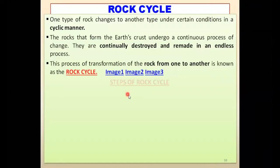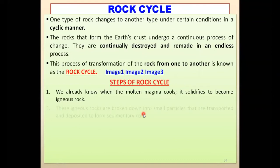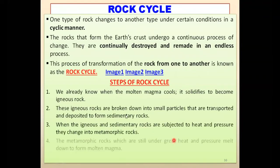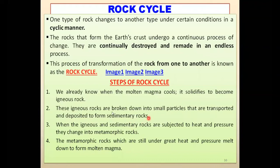So that is all about the rock cycle. What are the steps? When the mantle magma cools, it solidifies and becomes igneous rock. Igneous rocks are breaking down into small particles and transported to other places, changing into sedimentary rock. Both igneous and sedimentary rocks, when they come in contact with heat and pressure, break down and change into metamorphic rock. Again, those rocks under heat and pressure will melt down and become molten magma. Magma comes out as lava, cools down, and again forms igneous rock. So here is the cycle of the rock cycle.